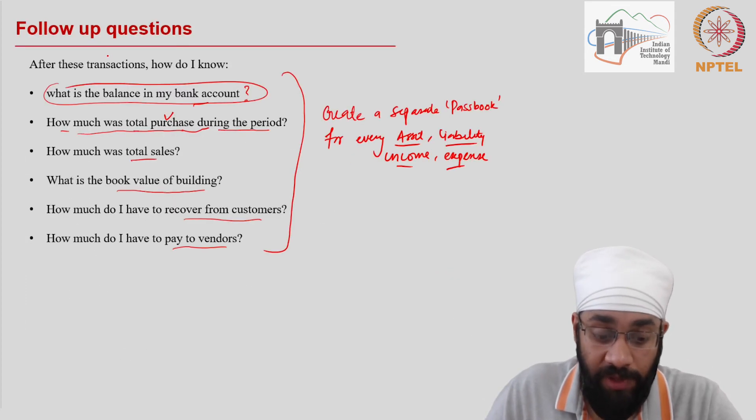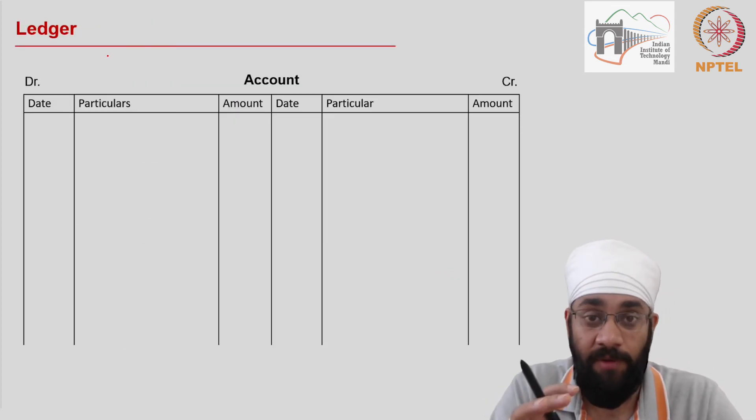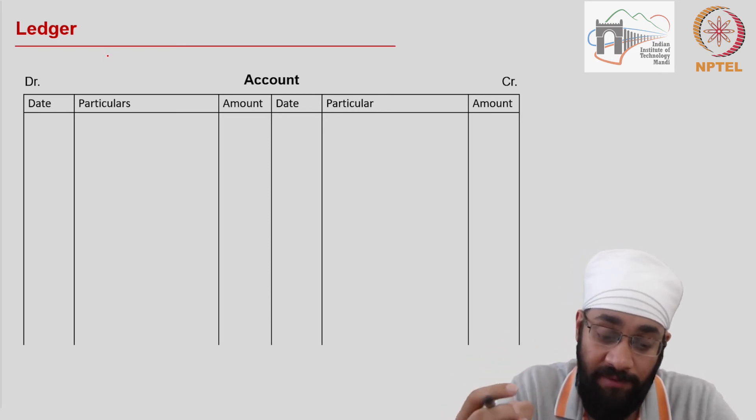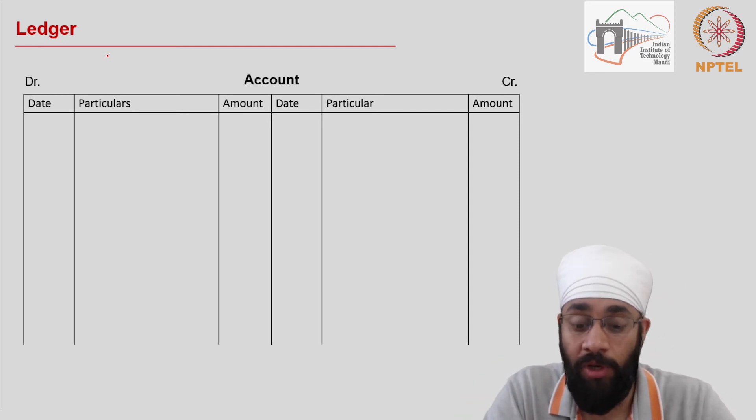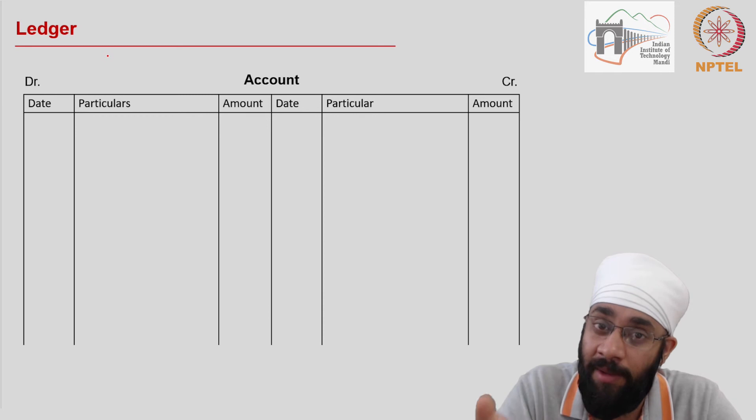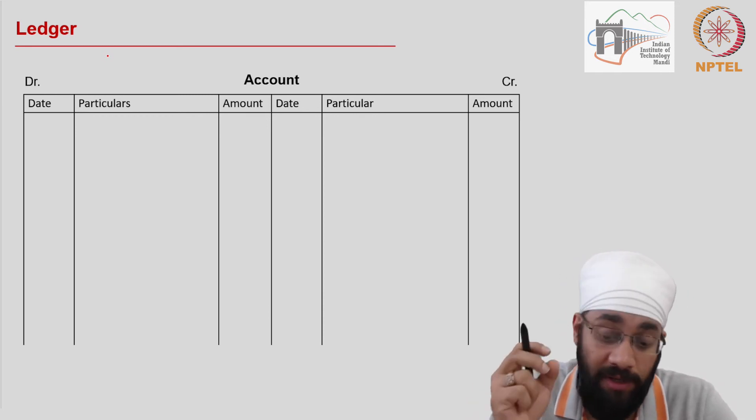In order to do that we have this format. This is the passbook, this is the fair homework book in which you are going to write transactions relating to one type of account and this could be an asset account, liability account, expense account or income account.